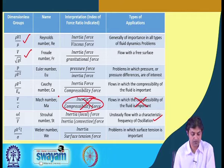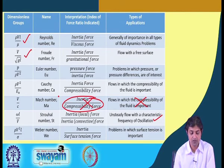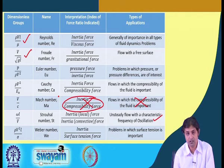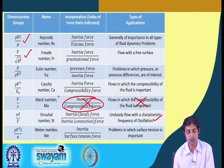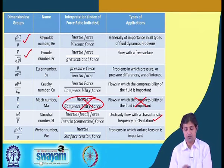Finally there is Weber number We, which is the ratio of inertia force to surface tension force, important in flows where surface tension is significant. Please consider the type of experiment you are doing, which category it falls into, and while doing dimensional analysis keep in mind which dimensionless number to aim for. In any flow problem it is best to obtain Reynolds number and Froude number — Froude number when gravity plays a role, such as in open channel flow.